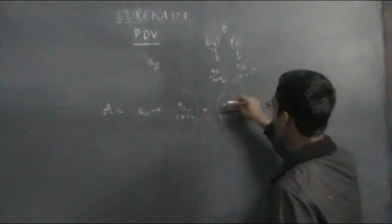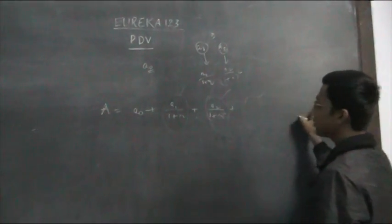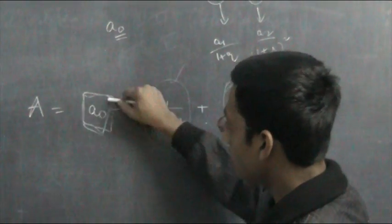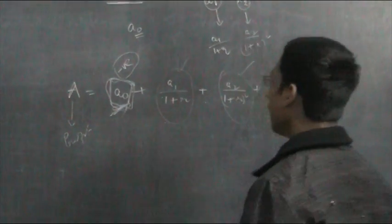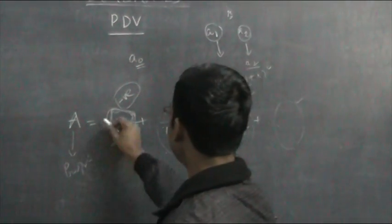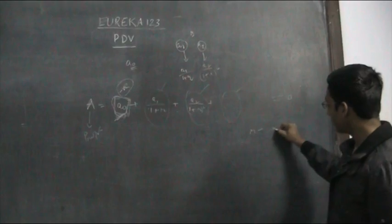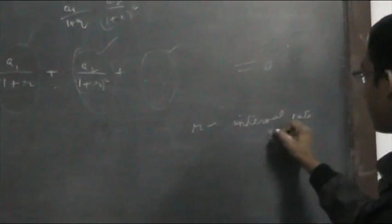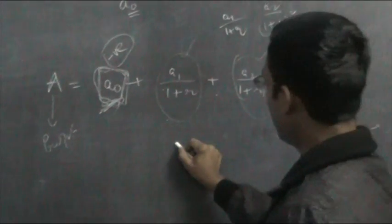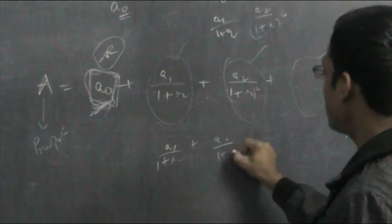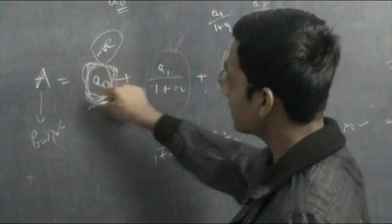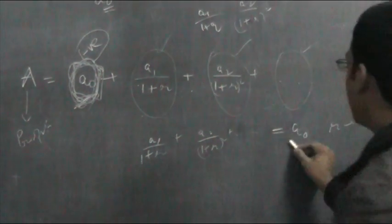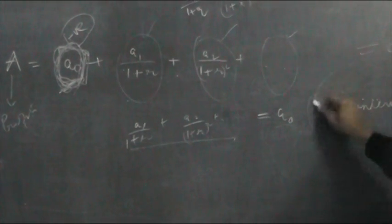The present discounted values of all the profits — first year, second year, third year — are summed up, and A0 is the initial cost which is negative. When A equals 0, R is called the internal rate of return. What is happening is: the present discounted value of all profits becomes equal to A0, meaning whatever was initially invested or the initial cost is fully recovered. We say R is the internal rate of return.